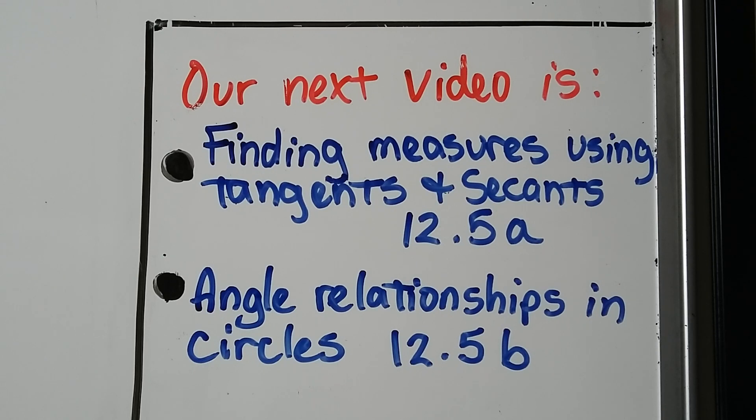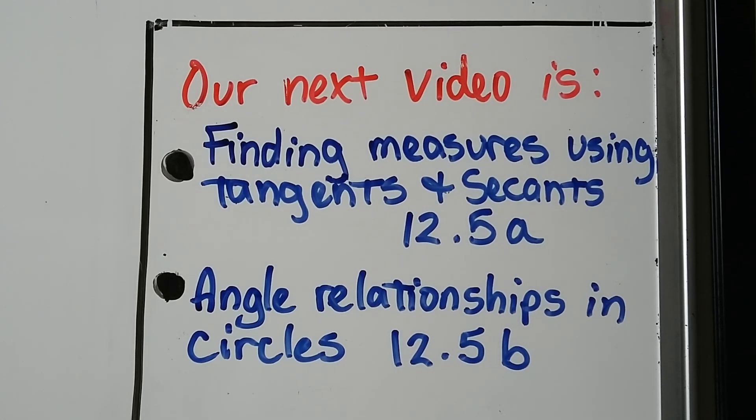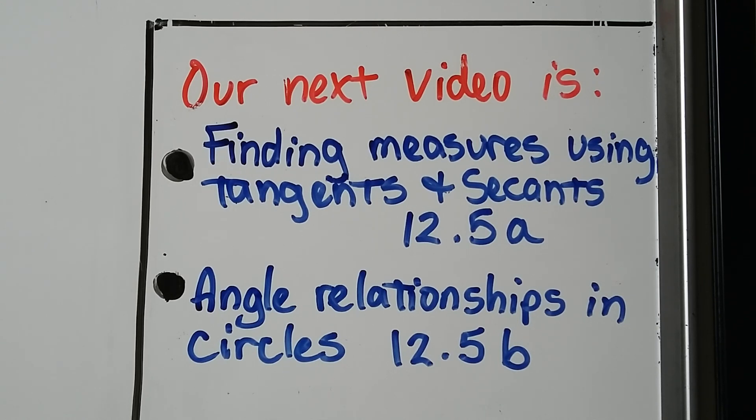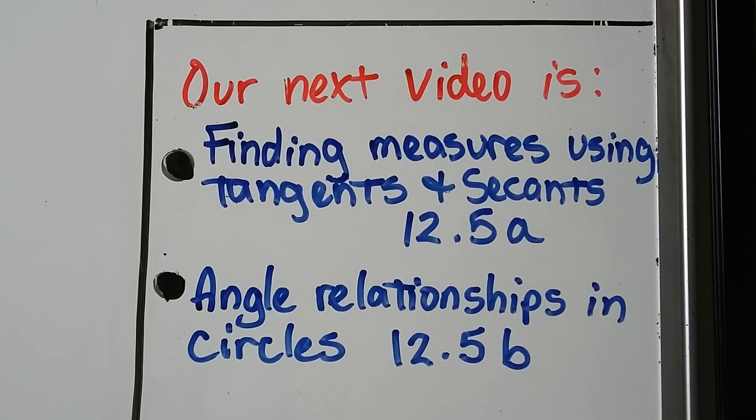So that's it for 12.4. Our next video lesson is going to be 12.5a. We're going to be finding measures using tangents and secants. And the second part of 12.5 is going to be angle relationships in circles, and I'll have a nice chart for you.